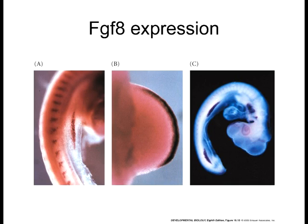This is mainly for proximal-distal patterning. There is a different signaling center that we're going to talk about that is primarily for anterior-posterior patterning. And there's a different region responsible for dorsal-ventral patterning. So there are actually multiple signaling centers in the developing limb that are necessary for proper development.